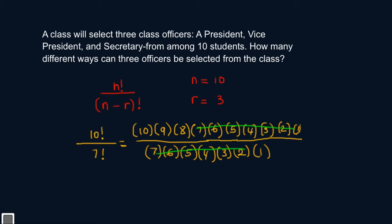So our answer would be 10 times 9, which is 90, times 8, which is 720. So you have 720 different ways three officers can be selected from a class of 10 students. That's our answer and that's how you interpret it.